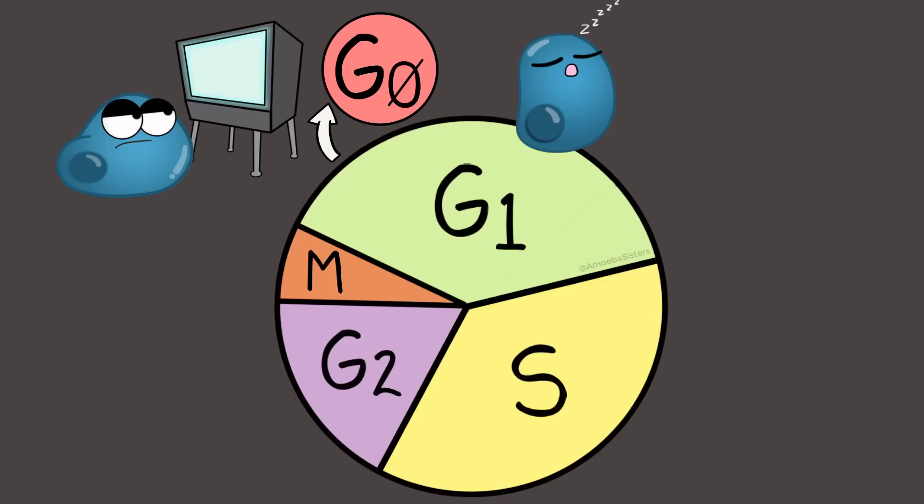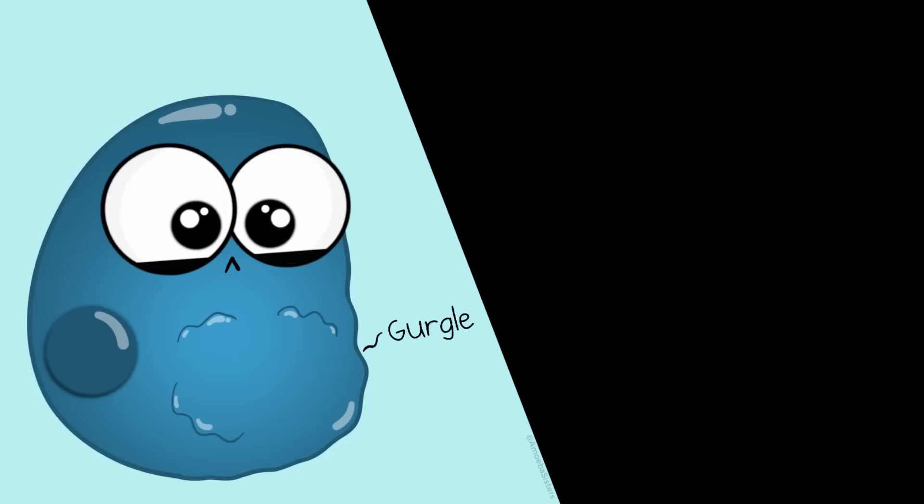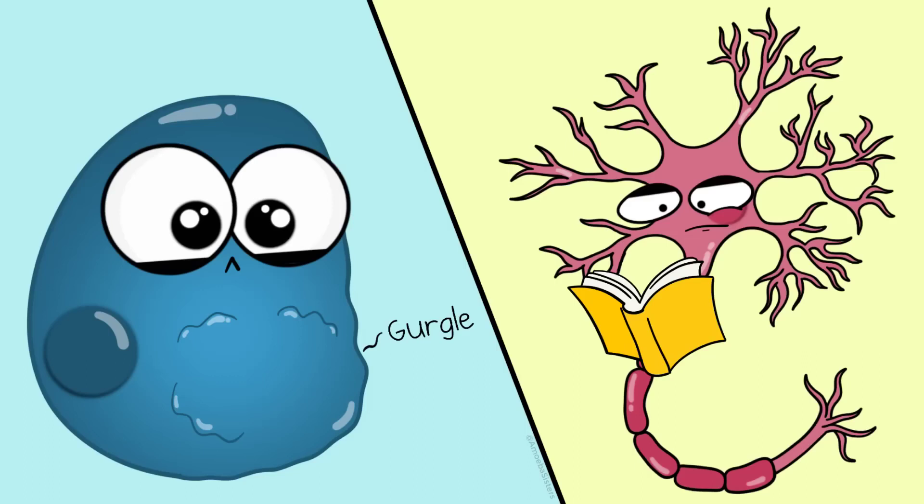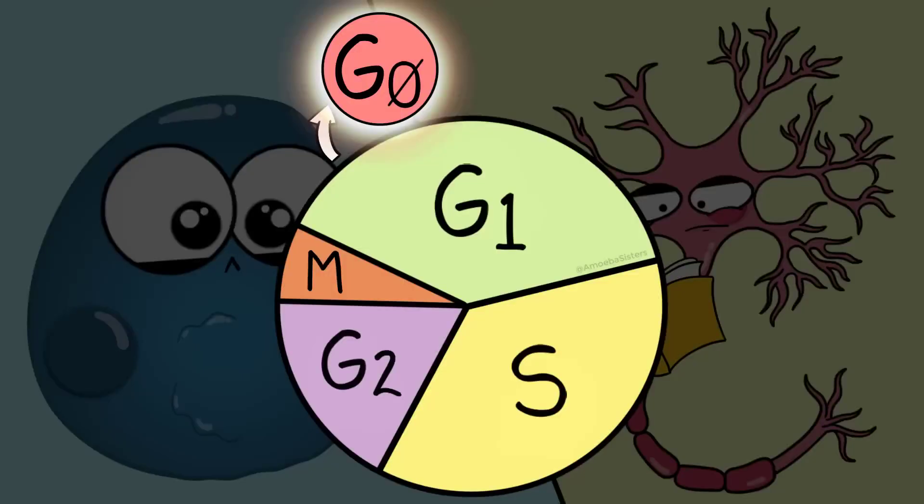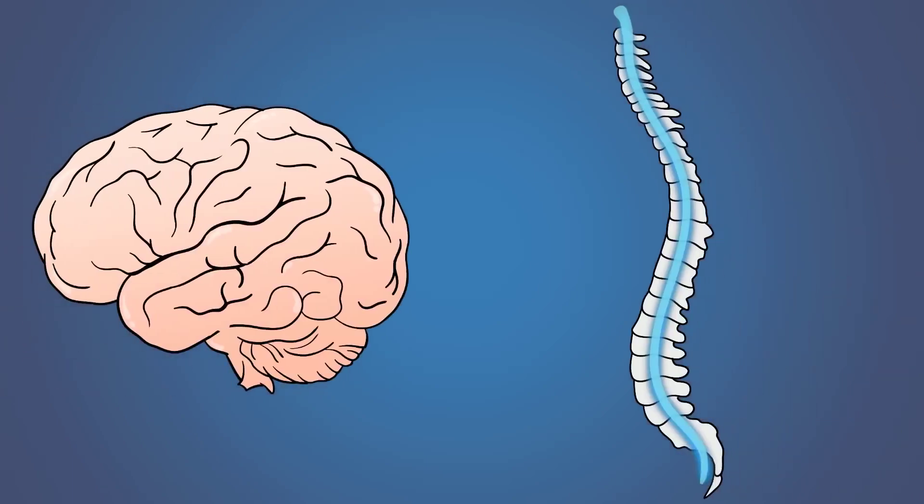Some cells go here temporarily—maybe if there's not enough resources around, for example. But some, like many types of neurons in your brain and spinal cord, may stay here permanently. If they stay here permanently, they'll never get to M phase, so they will not divide. This can be one reason why a major injury to the brain or spinal cord can have challenges with healing, as many of those cells may not be able to replicate—a topic that definitely continues to be researched.